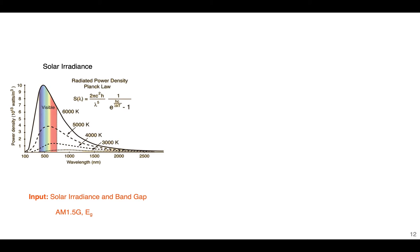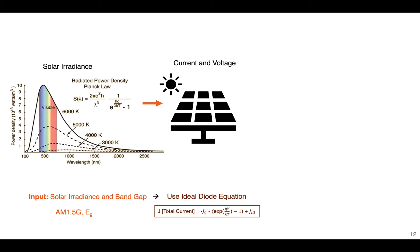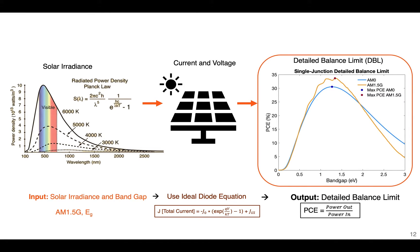With this equation, knowing the solar irradiance and the bandgap of any material, we can use the ideal diode equation to calculate the total current at a certain voltage. We can then use these equations and the AM1.5G spectra to output the Detailed Balance Limit graph, which calculates power conversion efficiency — power out over power in — graphed against varying bandgap to identify the limiting efficiency.